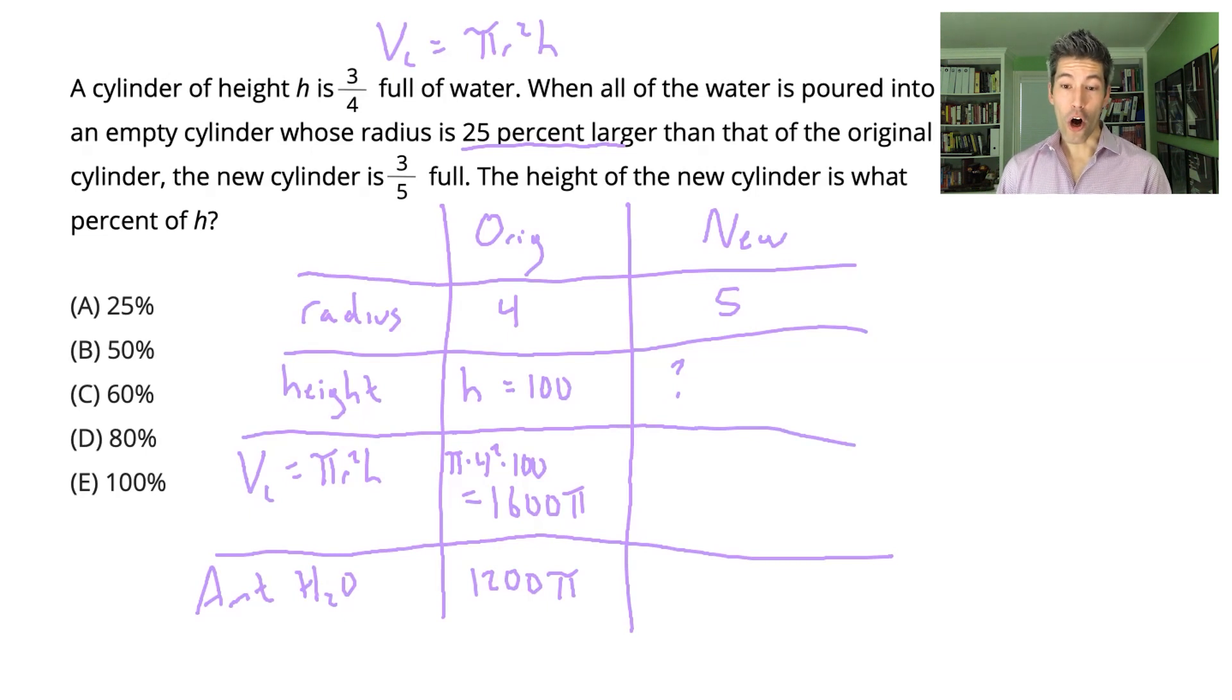When all the water is poured into the empty cylinder, all 1200π units of that starting water makes its way into the new cylinder. So I know the new cylinder's amount of water is the same as the old one, and this new cylinder is filled to three-fifths of its capacity. So what I want to say here is 1200π is equal to three-fifths of πr²h.